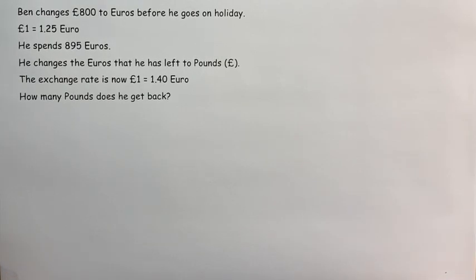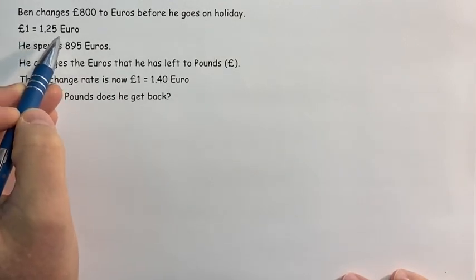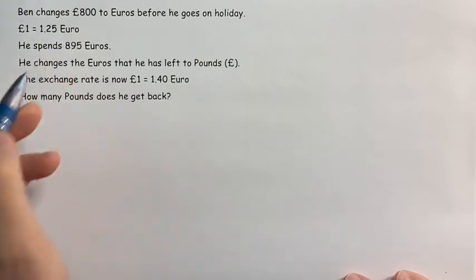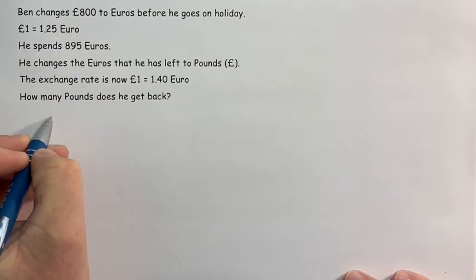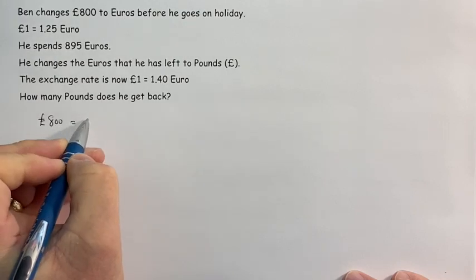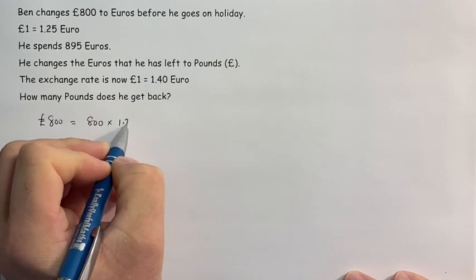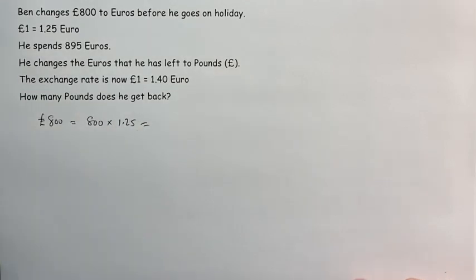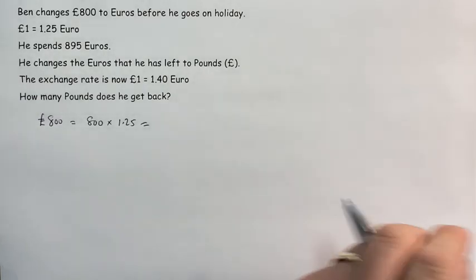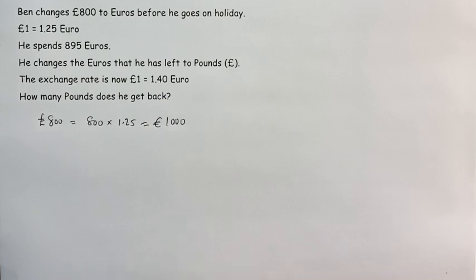Here is a question on exchange rates. We're told that one pound is equal to 1.25 euros. Ben has 800 pounds. To convert 800 pounds into euros, we would multiply by the exchange rate of 1.25. So on the calculator, 800 times 1.25 comes out to be 1000 euros.